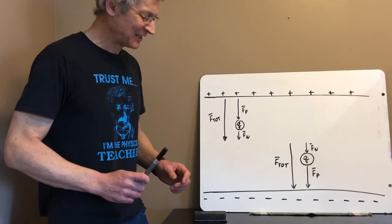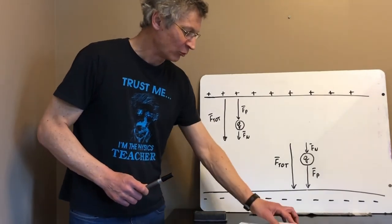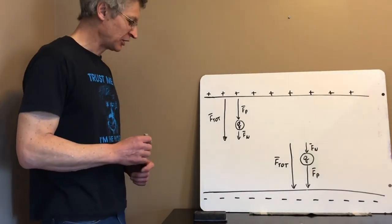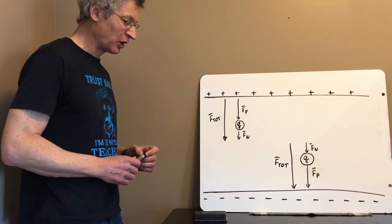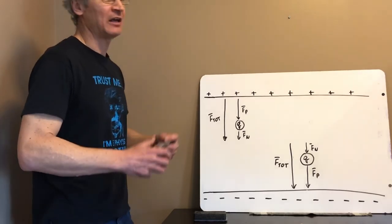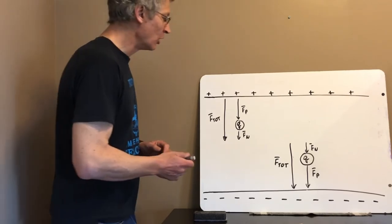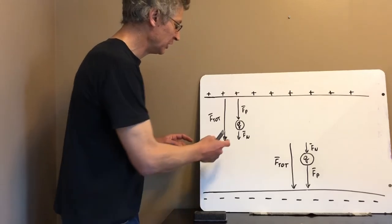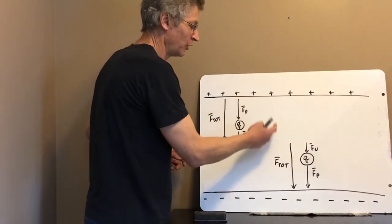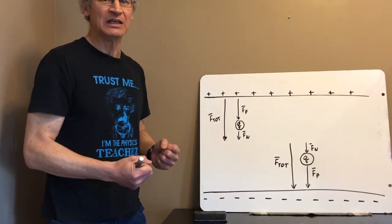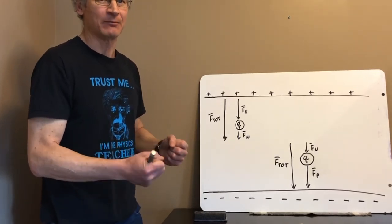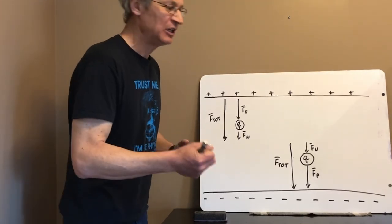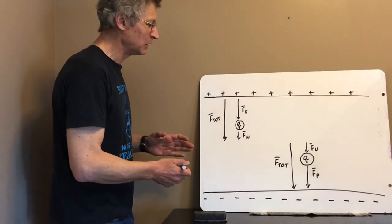Moving on to the second characteristic. The magnitude of E does not depend on the location between the plates. As long as you don't get too close to the edges, no matter where you go in between the plates — whether you're close to the positive or close to the negative — the magnitude of E is going to be exactly the same. That might be intuitive, but let's see if we can prove that no matter where you go between the plates, the electric field stays the same.